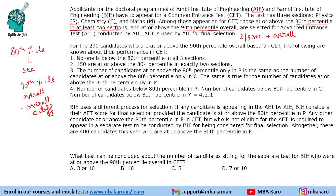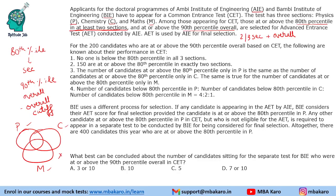For the 200 candidates who are at or above the 90th percentile overall based on CET — these people have cleared the overall cutoff. The conditions given are: no one is below the 80th percentile in all three sections. That means there is no person outside this Venn diagram; people will clear one cutoff, two cutoffs, or all three cutoffs.